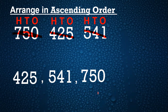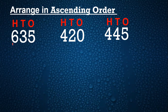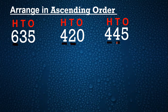Now let's see another example. Here we have 635, 420, and 445. To know which number is big and which is small we need to see the digits in the hundreds place. In the hundreds place we have 6, here we have 4, and here also we have 4. When we have the same digits in the hundreds place, we will look at the digits in the tens place. Here we have 2 and here we have 4. So which one is small? 2 is smaller. So first will come 420. We'll cut this.